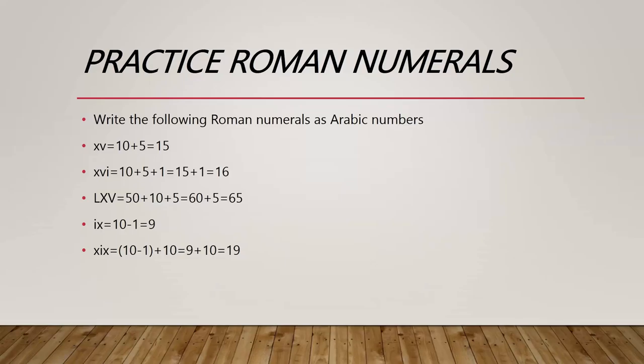Going back from Roman numerals to Arabic numerals: XV — X is 10 and V is 5, so 10 plus 5 equals 15. XVI — X is 10, V is 5, and I is 1, so 10 plus 5 plus 1 equals 16.